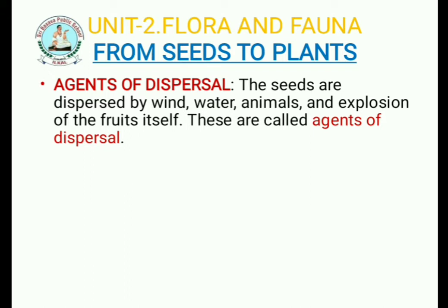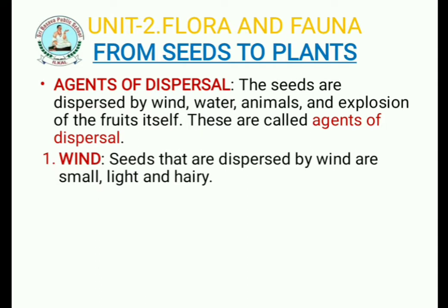The first agent of dispersal is wind. Some seeds are scattered or dispersed by the wind — by the force of moving air. Wind, which is nothing but moving air or a current of air, helps in the dispersion of small, light, and hairy seeds. They can fly in the air and fall somewhere, and from these seeds new plants will grow.